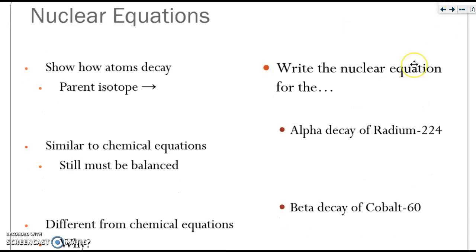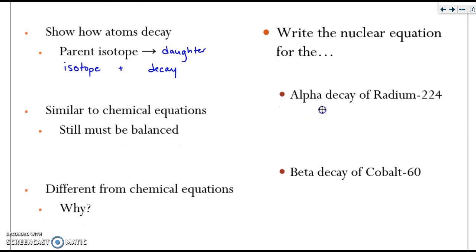Let's discuss nuclear equations. These equations are chemical equations that show how atoms decay. The parent isotope always turns into what is called the daughter isotope, plus whatever the decay product is. They are similar to chemical equations because they are still balanced, but balanced differently because we're producing something new. We're going to make sure that the atomic number and the mass number on each side of the equation are equal. They differ from chemical equations because they produce new elements.